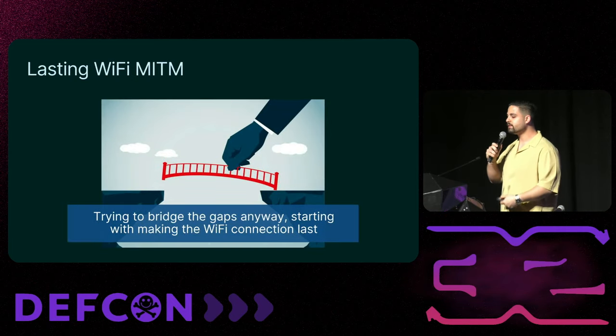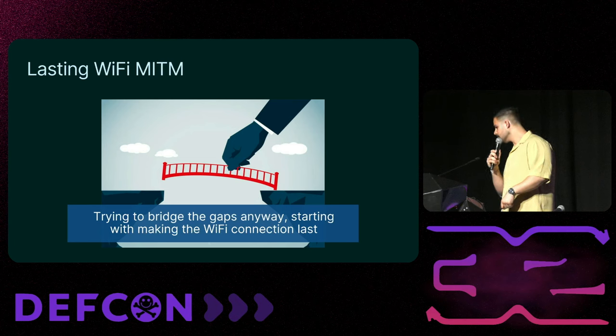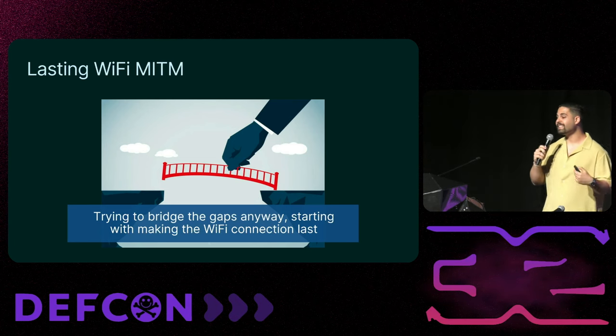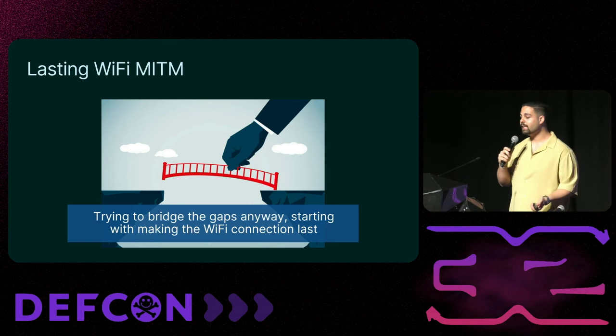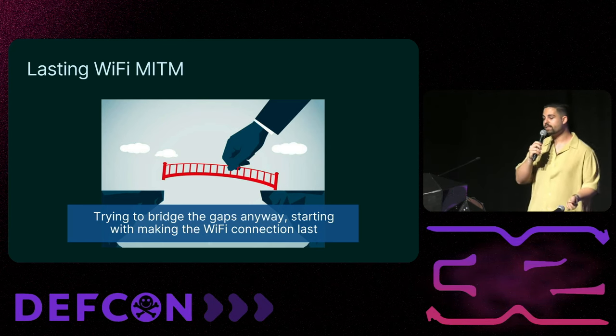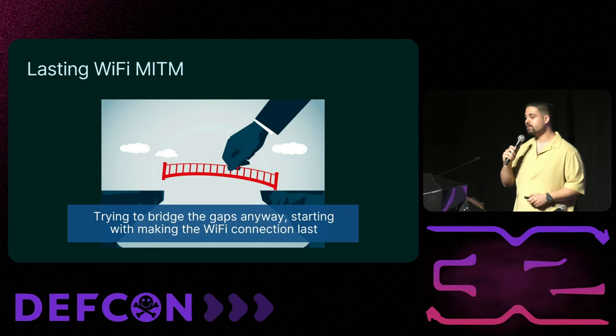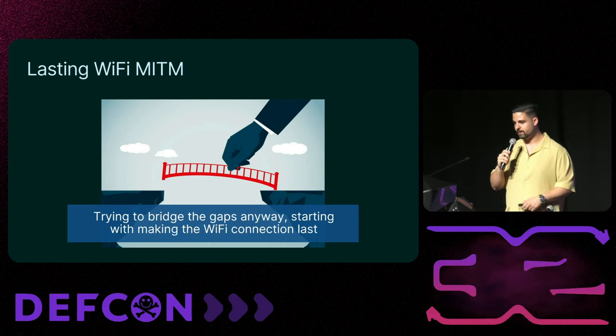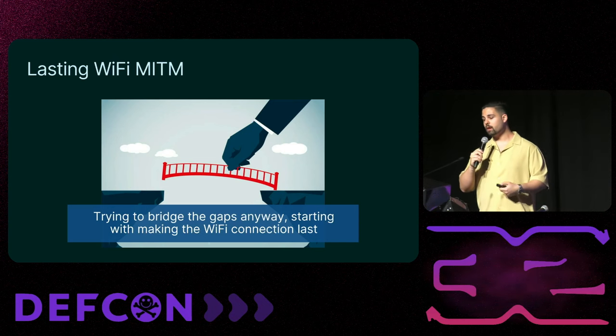We still didn't have the exact abilities we needed. Since being a man-in-the-middle might help anyway, we decided to start by making the Wi-Fi connection last longer, as it was only active for about 30 seconds. We tried to think of a way to prevent QuickShare from returning to its original Wi-Fi network once a file sending session was over. A very simple solution came up: crashing QuickShare right after the Wi-Fi connection to our rogue AP was established.